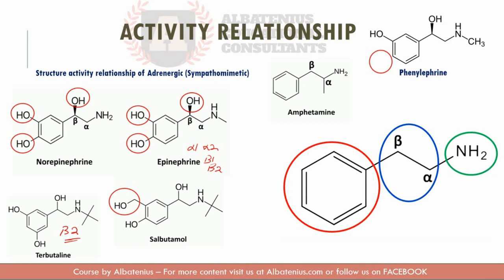The replacement of the meta-hydroxyl of the catechol increases beta-2 selectivity and decreases metabolism by COMT. Comparing epinephrine with salbutamol, the addition of the CH2 group before the hydroxyl makes salbutamol more selective as a beta-2 agonist.